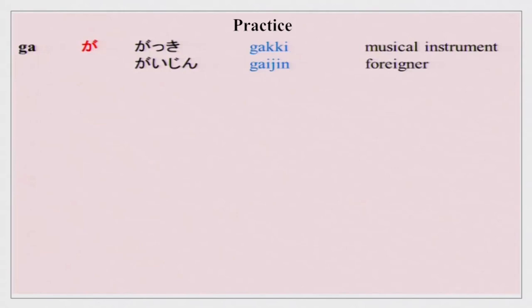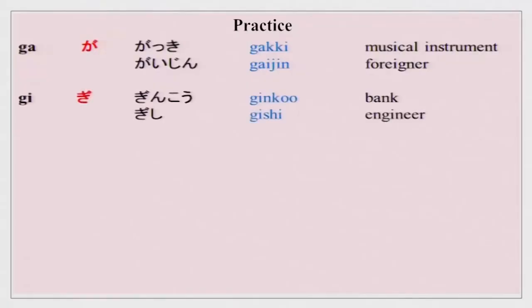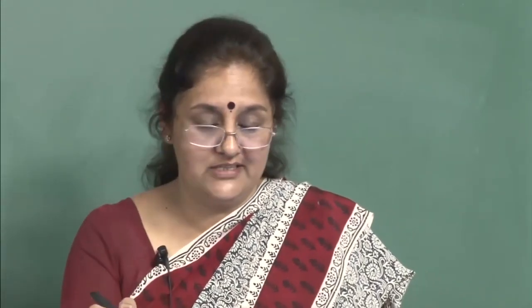The vocabulary for ga is gakki — gakki is a musical instrument — and gaijin. You remember the word gaijin? We did gaijin in lesson 2. Gaijin is a foreigner. Then we have gi: ginko — ginko is a bank — and gishi, gishi is an engineer.